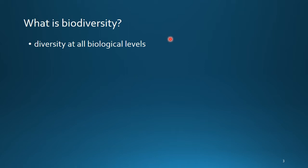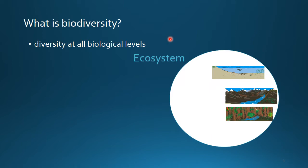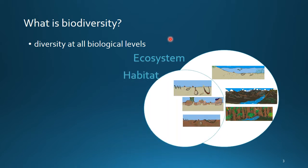So biodiversity — what is that? All of you probably have a quite good idea, but let's go through it because biodiversity covers the variety of diversity at all biological levels. Let's start from the top with ecosystem diversity, which covers the overall layout of a system such as abiotic factors. Zooming in from that, we get habitat diversity, which covers the range of habitat types in an area. For example, in the marine environment we get a large range of different habitat types.